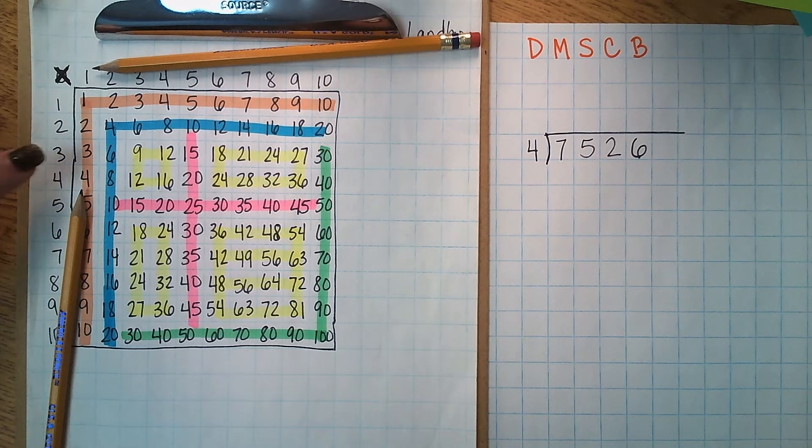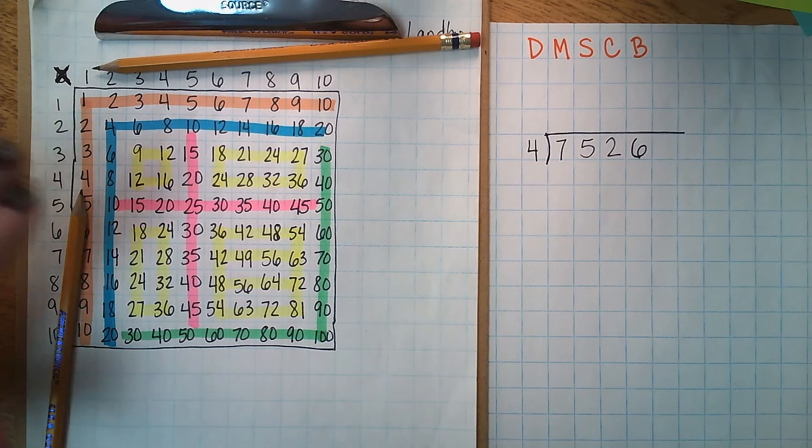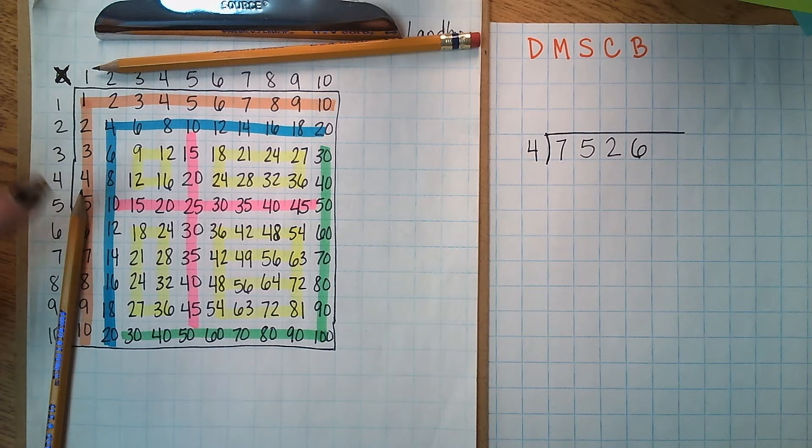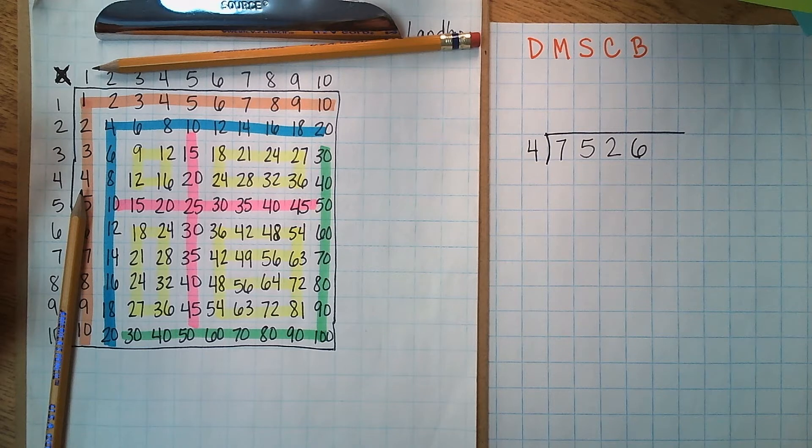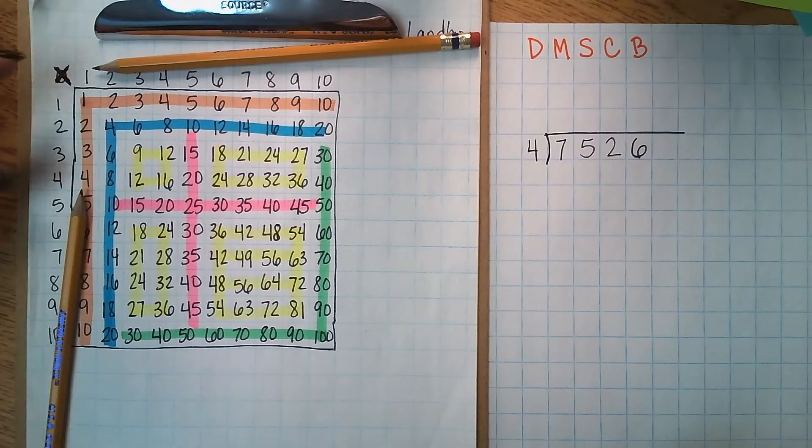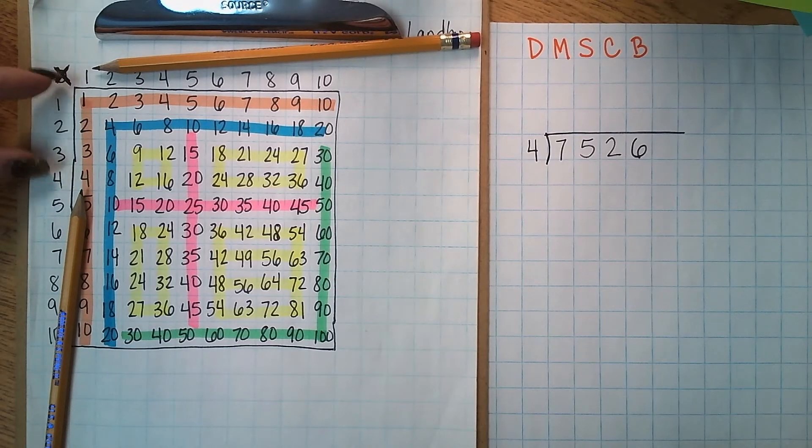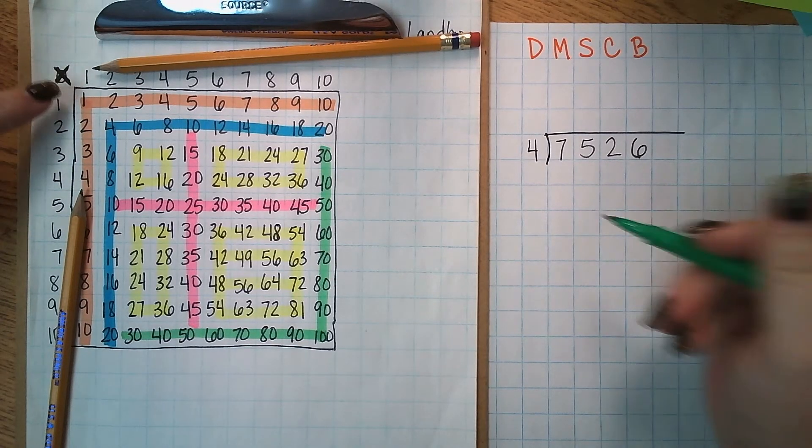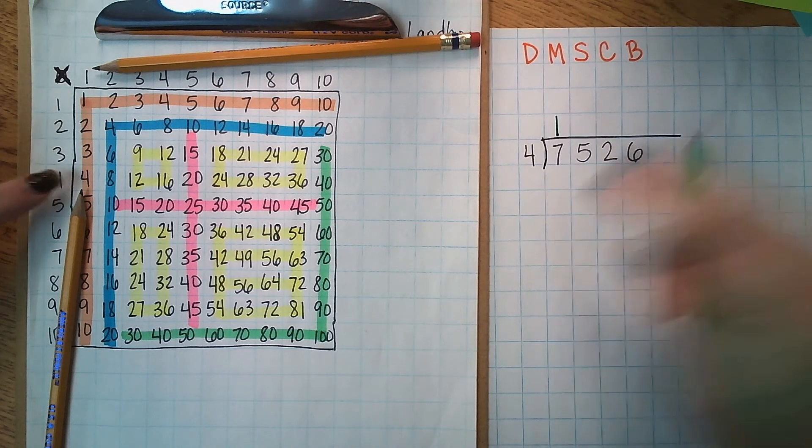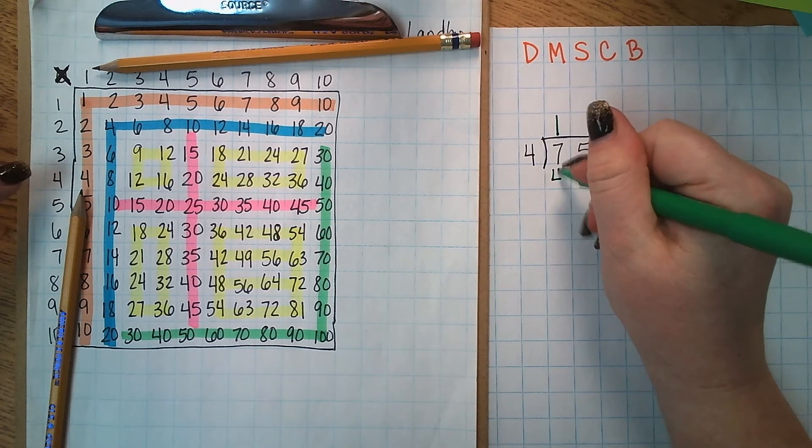I've told them in class that they want to be very careful not to bump anything because if they bump then it's going to make their pencils roll and they'll be on the wrong spot. Now once we have our pencils in the correct spot that tells me where these two numbers go. So my one is going to go on top of my seven and my four is going to go below my seven.